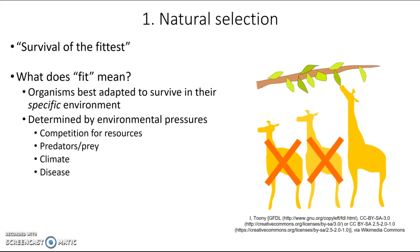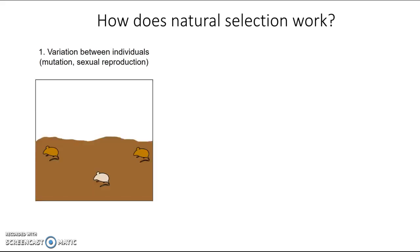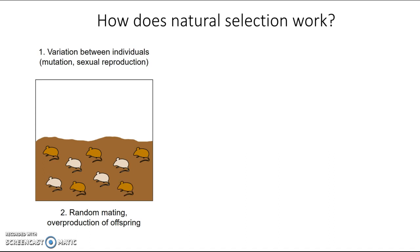So how does natural selection actually work? First, we need a population with variation between individuals, and that variation can arise via mutations or sexual reproduction. Here we have a population of mice with variation — they're not all the same color. The next thing we need is random mating and overproduction of offspring. Random mating means individuals can mate with whoever they like with no goal in mind. And in nature, populations tend to produce more offspring than the environment can support.